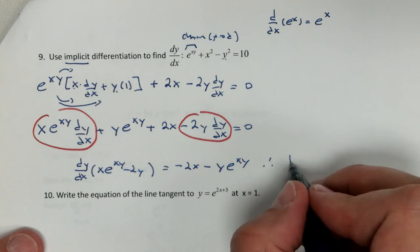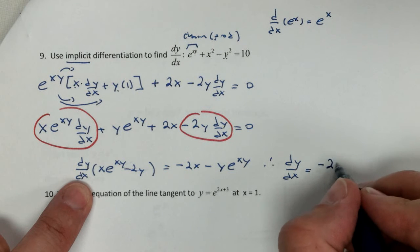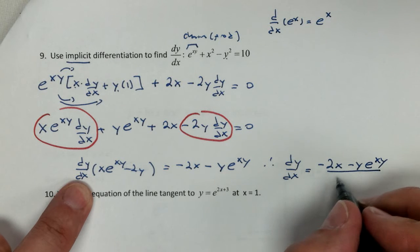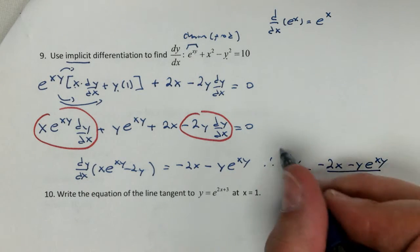And now I can take my derivative, dy dx, I just divide, right? Negative 2x minus y e to the xy over x e to the xy minus 2y. And there's our answer. There's our derivative. Piece of cake. Easy as pie.